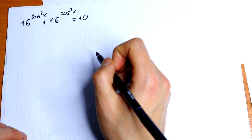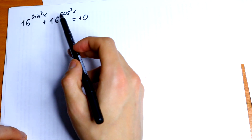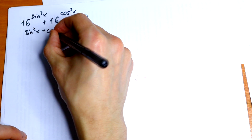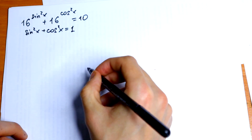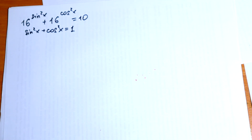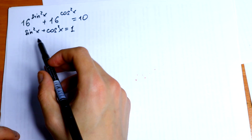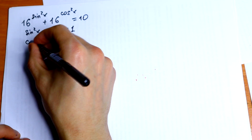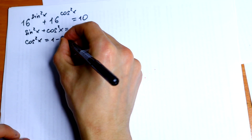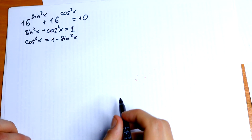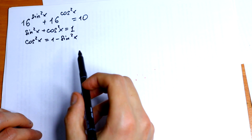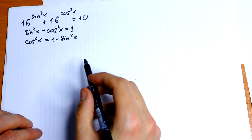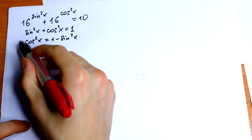First of all, we can simplify a little bit — we don't need separate sine and cosine. We know that sine squared of x plus cosine squared of x equals 1. This is the classic Pythagorean identity, so we can use it. We represent cosine squared of x as 1 minus sine squared of x.